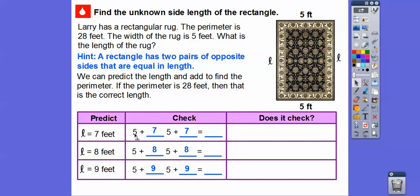So we'll plug the 7s in. So it would be 5 plus 7 plus 5 plus 7. So when we add 5 plus 7, 5 plus 7 is 12, plus another 5 plus 7, which is another 12. So 12 and 12 is going to give us 24. Is that 28? No, it's not 28, so that one's not going to work. Since 24 is less than 28, let's try a bigger number for the length.